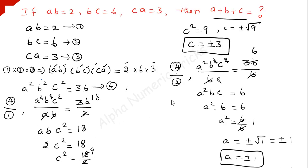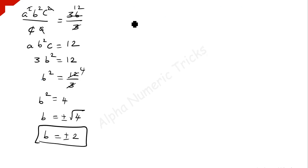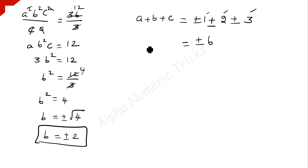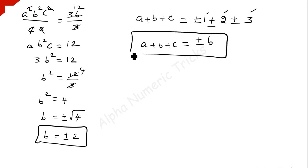So we now have all the values: A is plus or minus 1, B is plus or minus 2, and C is plus or minus 3. Therefore A plus B plus C is equal to 1 plus 2 plus 3, which equals plus or minus 6.